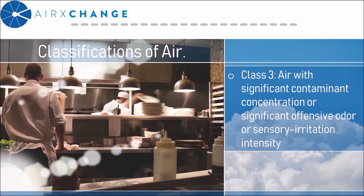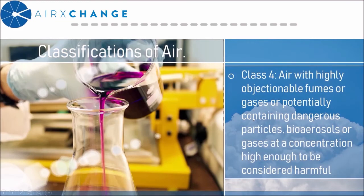Class 3 air is air with significant contaminant concentration or significant offensive odors — examples of this type of space include kitchens, dry cleaners, beauty salons, and pet shops. Class 4 air is air with highly objectionable fumes or gases, or potentially containing dangerous particles. This would be your lab and process exhaust — examples include paint spray booths, laboratory fume exhaust, and kitchen grease exhaust.